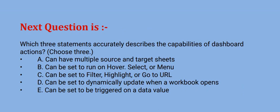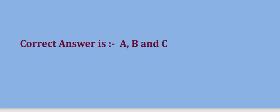Next question is: which three statements accurately describe the capabilities of dashboard actions? Choose three options. Options are option A can have multiple source and target sheets, option B can be set to run on hover, select, or menu, option C can be set to filter, highlight, or go to URL, option D can be set to dynamically update when a workbook opens, option E can be set to be triggered on a data value. The correct option is option A, B, and C.